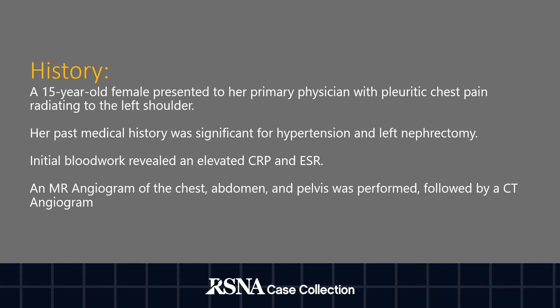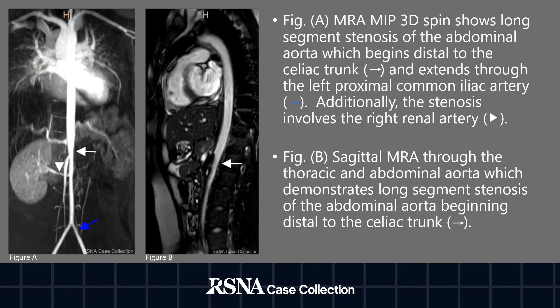The next step in the workup was an MR angiogram of the chest, abdomen, and pelvis, which was subsequently followed by a CT angiogram of the chest, abdomen, and pelvis. On the left side of this slide you'll see two images taken from the MRA study. Figure A is a maximum intensity projection and Figure B is a sagittal cut through the thoracoabdominal aorta. Figure A demonstrates a long segment stenosis beginning at the level of the celiac artery and extending through the left common iliac artery, demarcated by the white and blue arrows. Additionally, you can see stenosis of the renal artery demarcated by the white arrowhead. Figure B shows an additional sagittal cut redemonstrating this long segment stenosis.